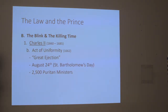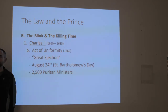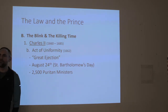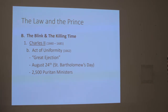In 1662 you have the Act of Uniformity, and this is the beginning of the Great Ejection, where some 2,500 Puritan ministers are ousted from their pulpits, ousted from their churches, and not allowed to come within a certain distance of these churches — something like a restraining order on them. This is all done on August 24th, which was the same day of the year in the previous century when the St. Bartholomew's Day massacre had occurred in France and various Reformed Protestants were killed by the tens of thousands. So it's a rather symbolic day to have the Act of Uniformity declared and passed.